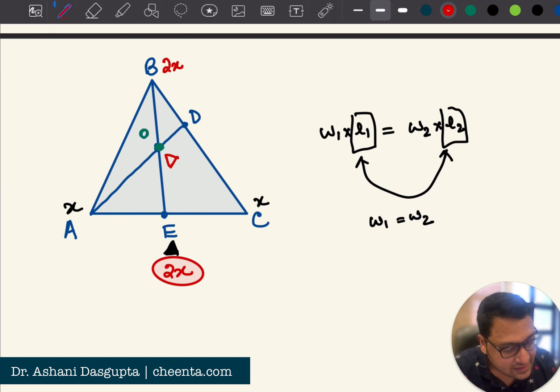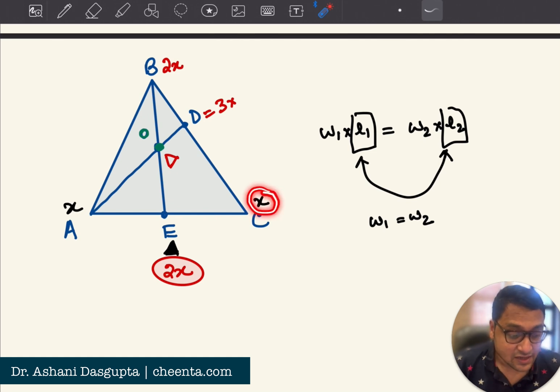So the weight is 2x again. Which means that the weight at D is 3x, isn't it? Because the weight at B is 2x, weight at C is x. So now you are imagining that the entire weight of BC is concentrated at the point D. So, it's 3x.